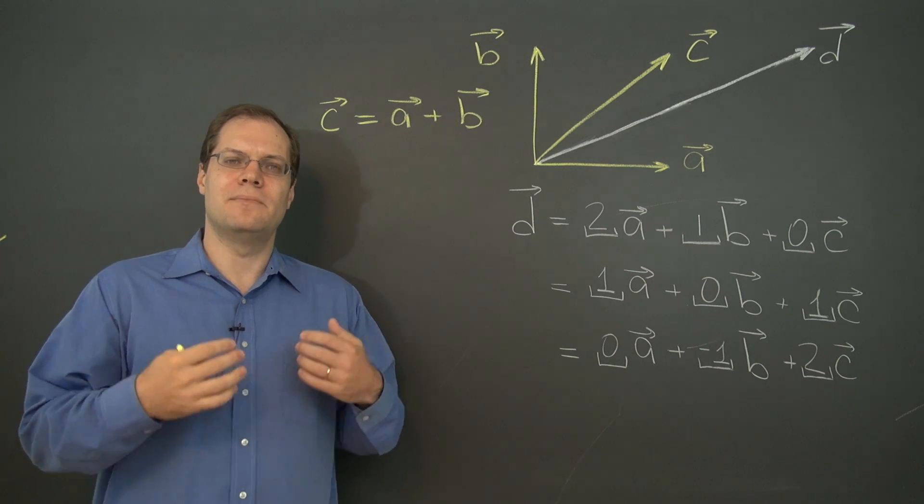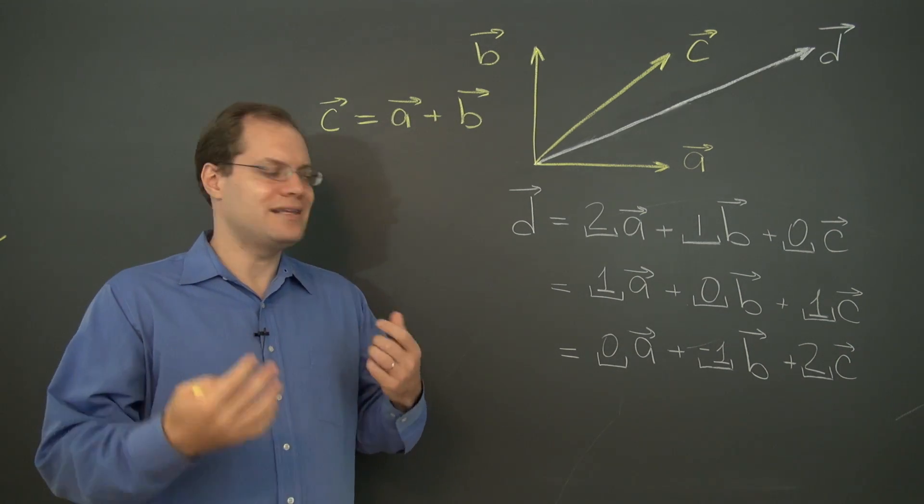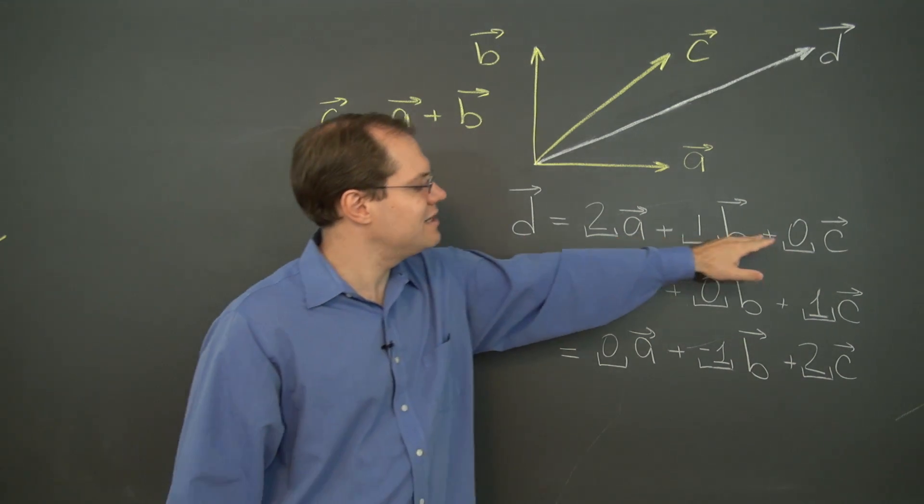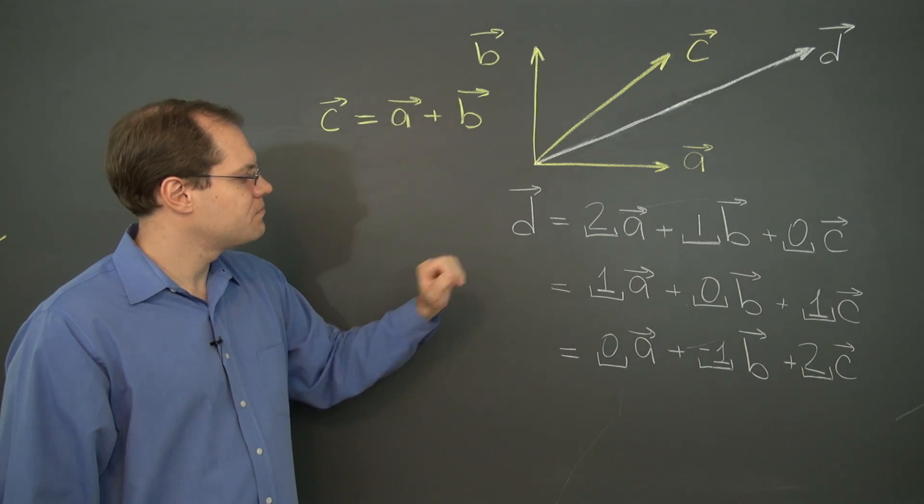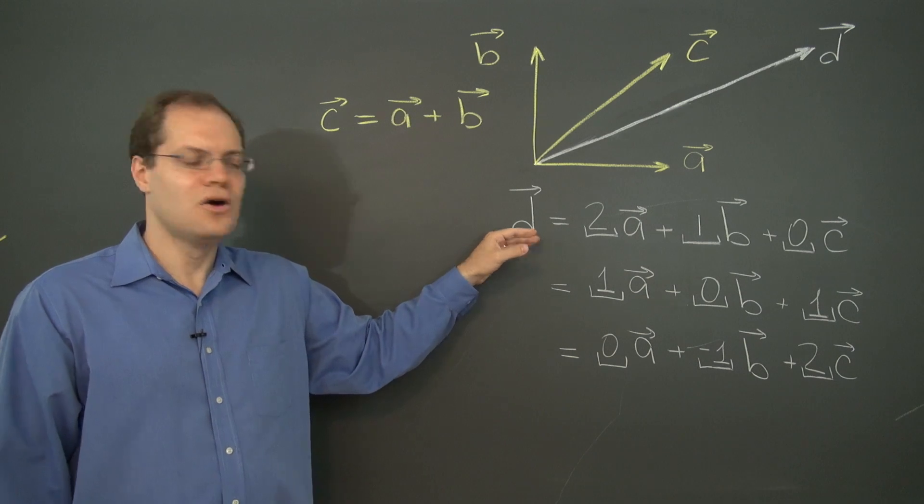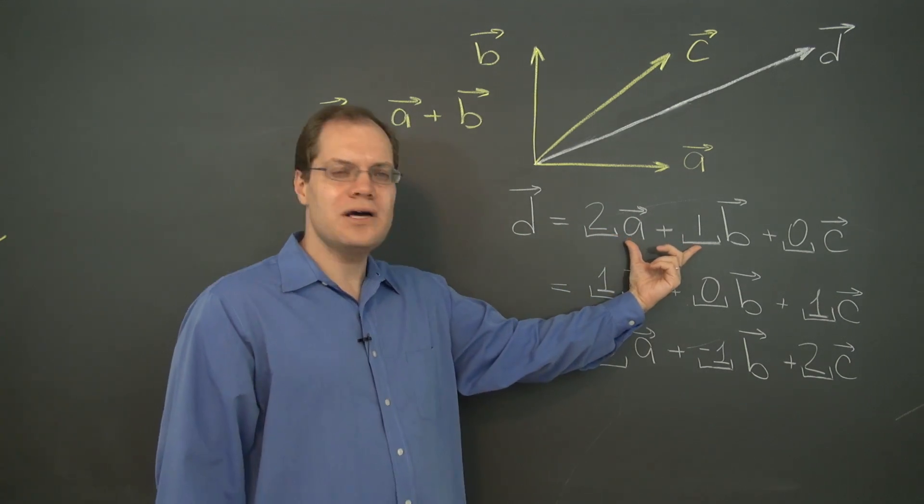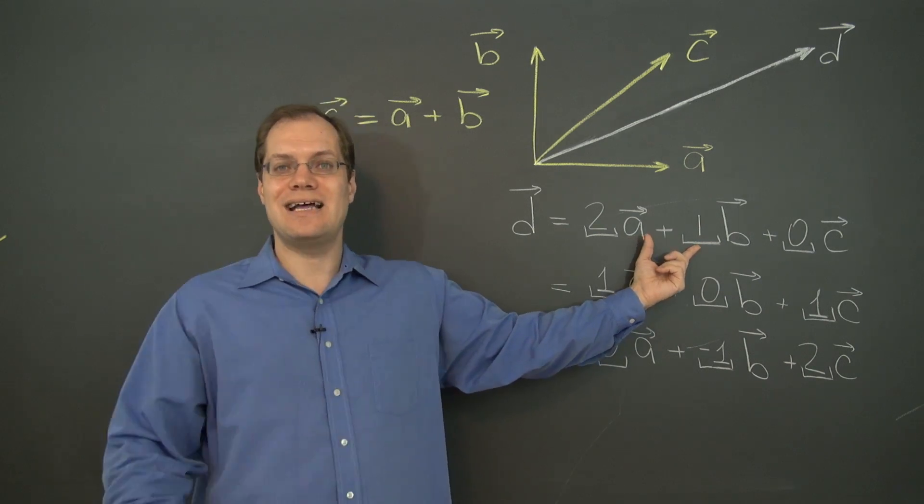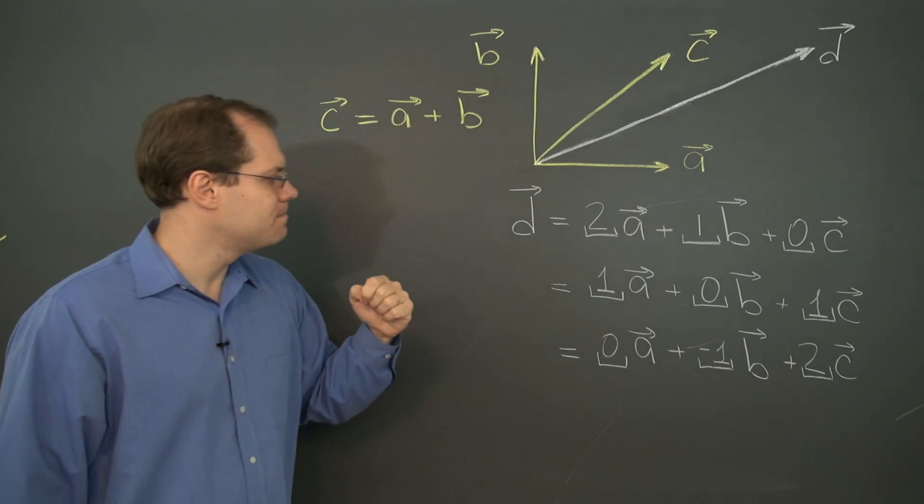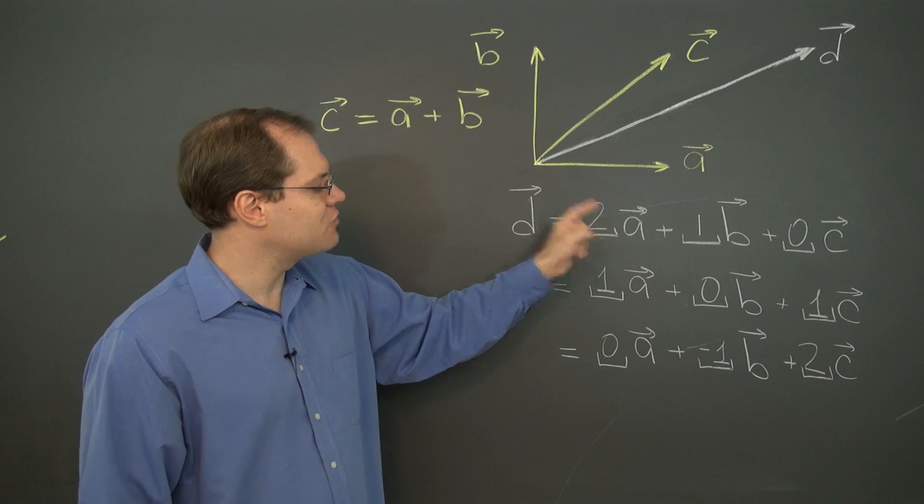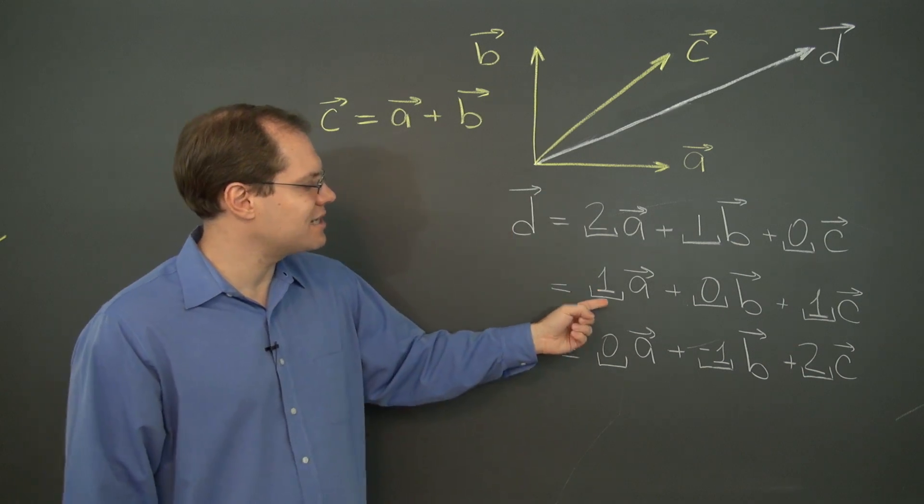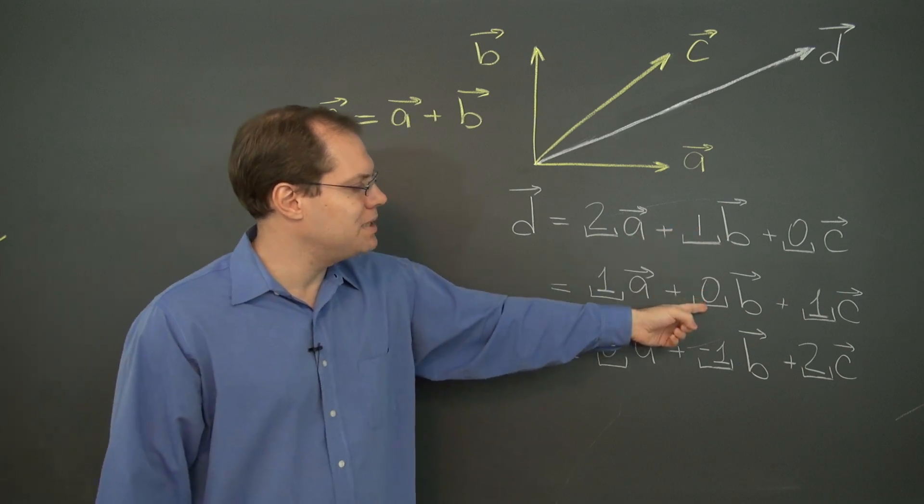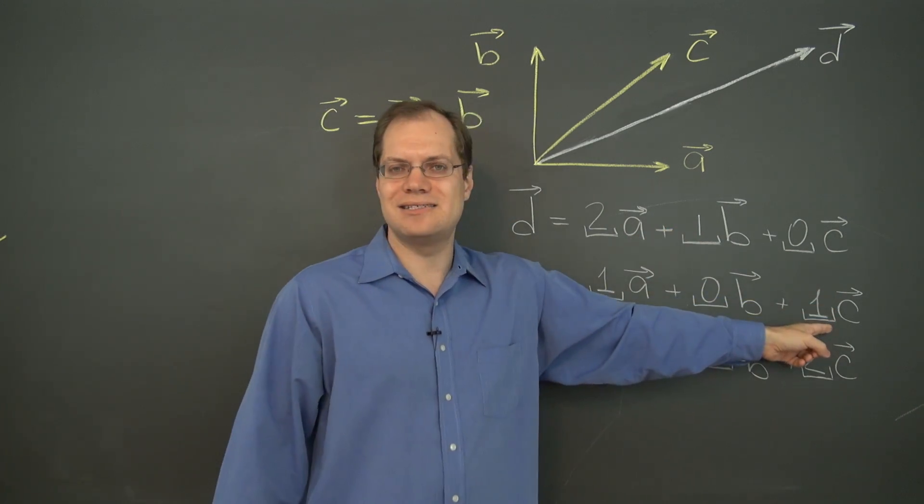There is a relationship among a, b, and c. So that means that whenever we're looking at a linear combination that produces a vector d, whenever there is, in one way or another, a plus b in there, we can take it out and replace it with c. That's actually what happened from the first linear combination to the second. There were two a, we went down to one a, we took out a b, and instead we added c.